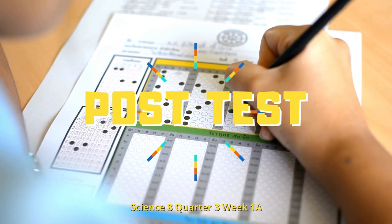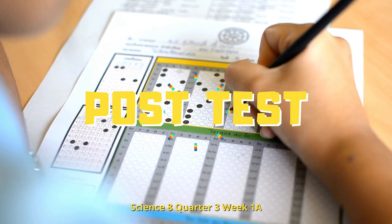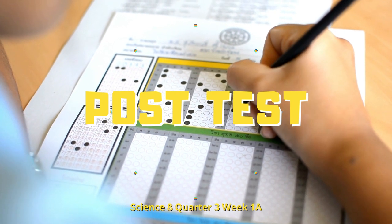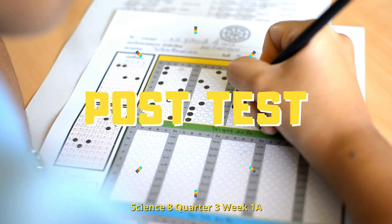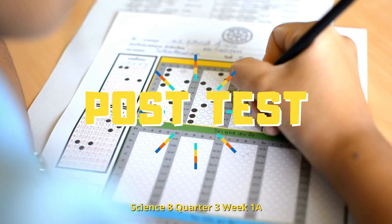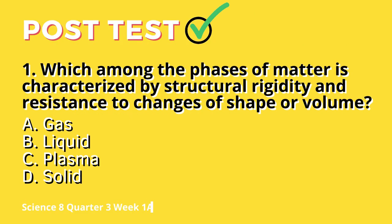Now, let's move to the post-test. Choose the letter of the best answer and write the chosen letter on a separate sheet of paper. Question 1: Which among the phases of matter is characterized by structural rigidity and resistance to changes of shape or volume? A. Gas, B. Liquid, C. Plasma, D. Solid.